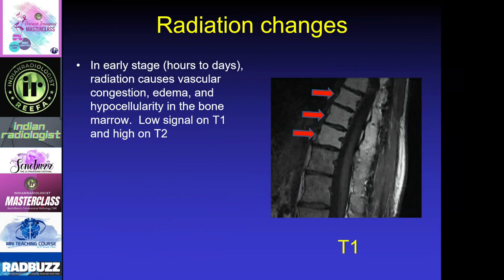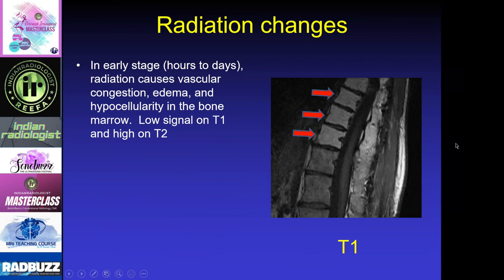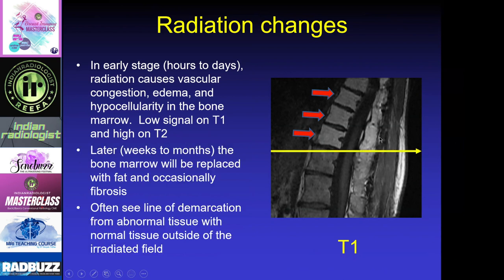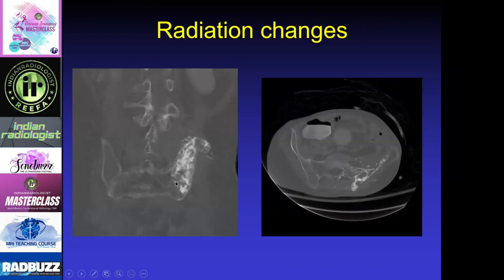Radiation changes — in this case a lady with breast cancer, we can see the margin of where the radiation field occurred. Up here was where the radiation was done, and now the bone marrow is all fatty replaced. Early on with radiation, there is vascular congestion and edema, leading to low signal on T1 and high signal on T2. Later, weeks to months, the bone marrow is replaced with fat, and in some instances perhaps fibrosis. You can see a very sharp line between what's normal and what's abnormal. Another case shows radiation to the iliac bone where it is much more sclerotic and the iliac bone is more deformed.